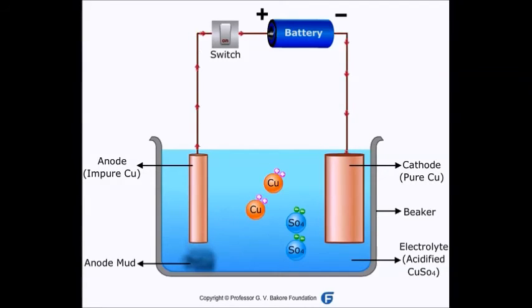The anode, which was made up of impure copper - the impurities fall below the anode and get collected in the form of anode mud. Copper which is deposited on the cathode is pure copper and can be used for making electric wires, cables, or utensils.